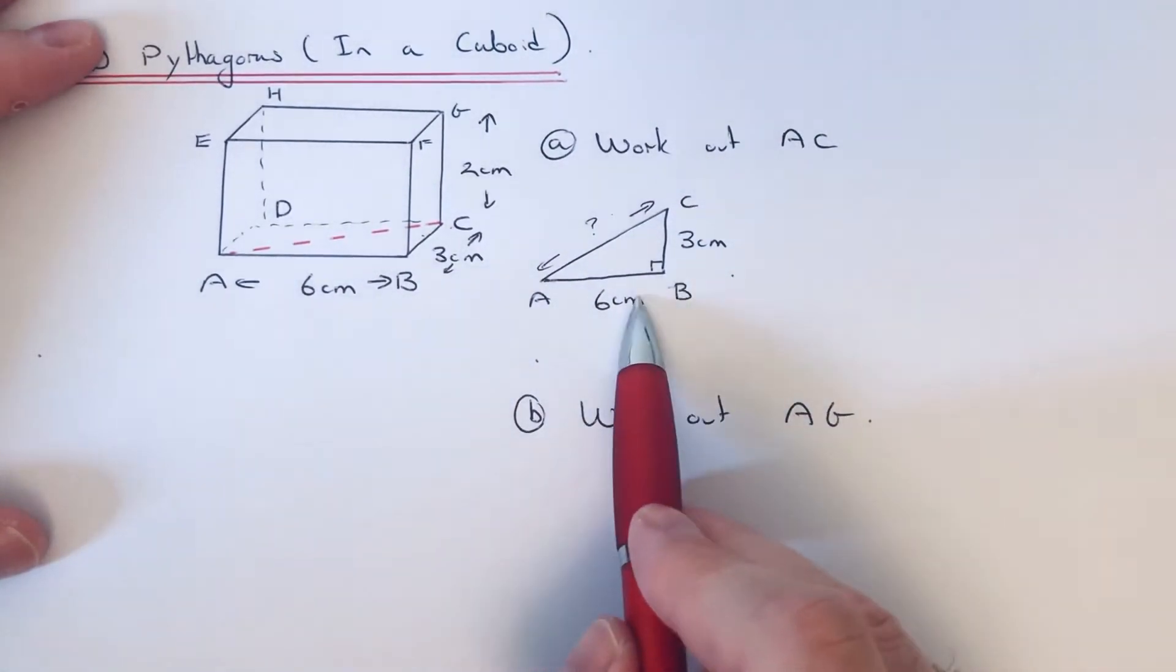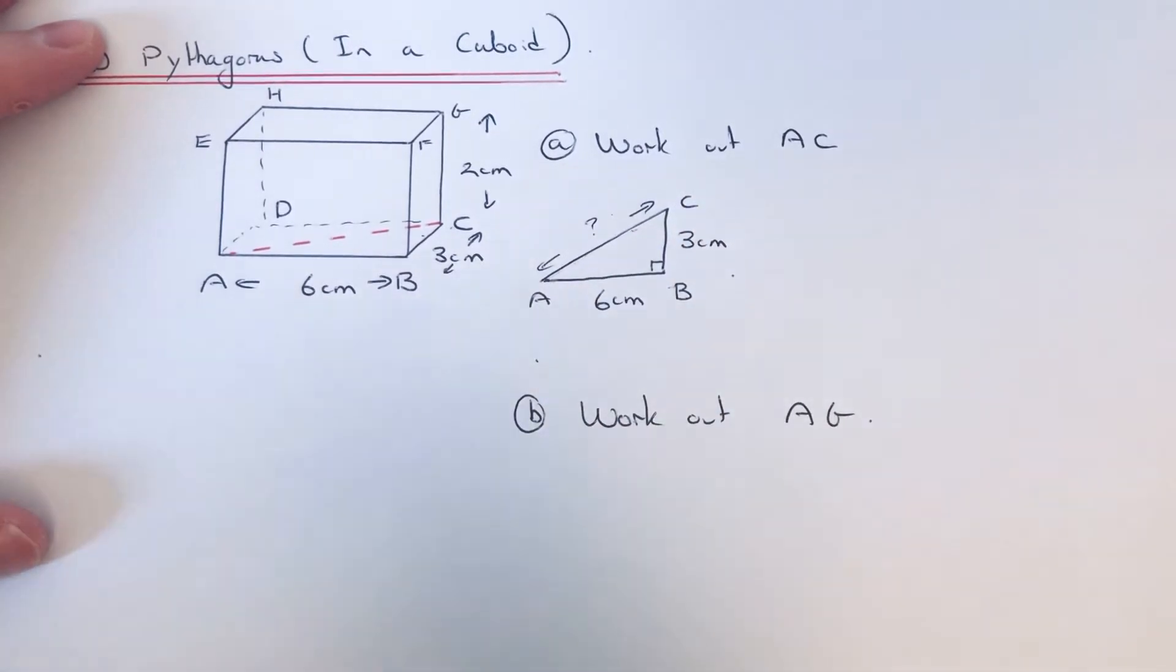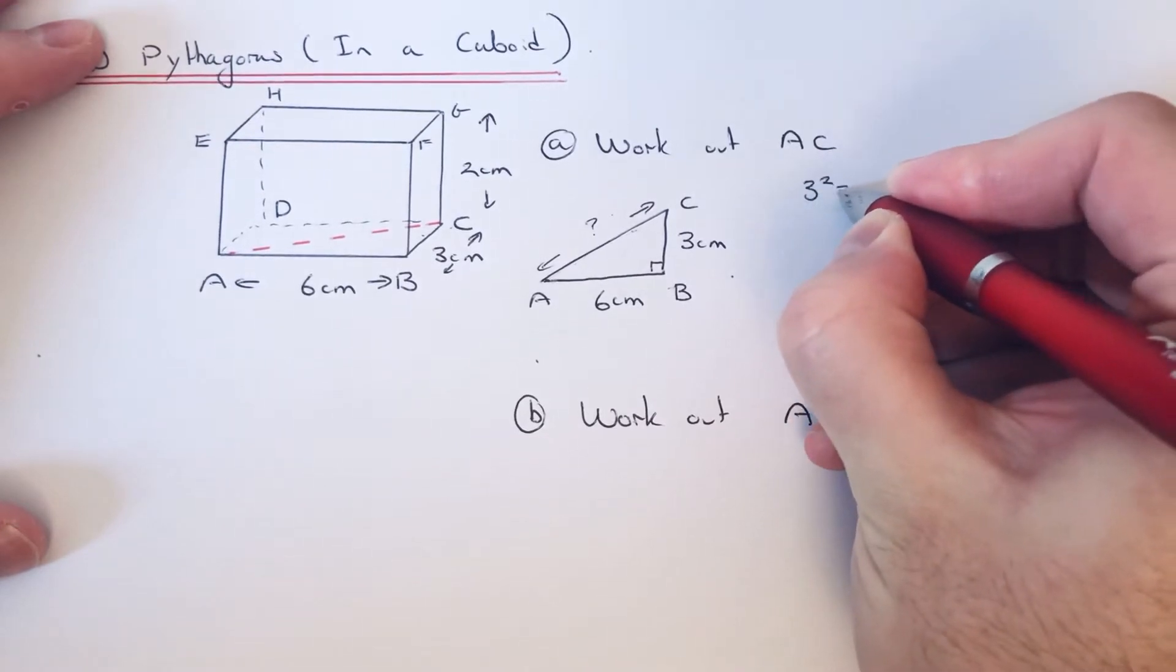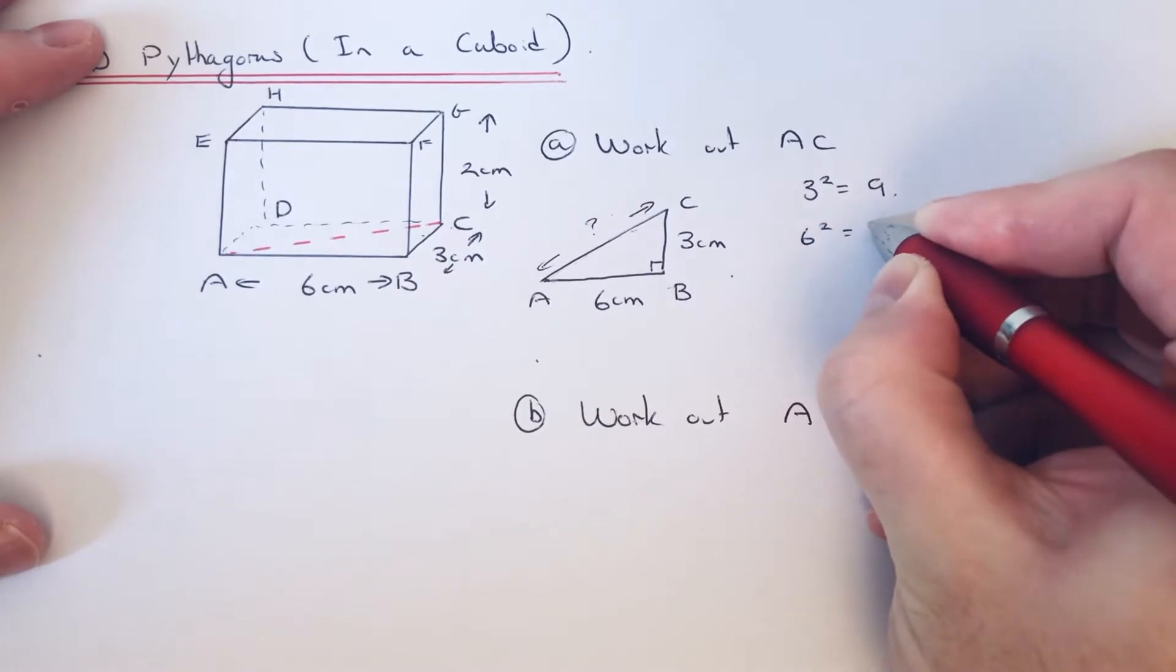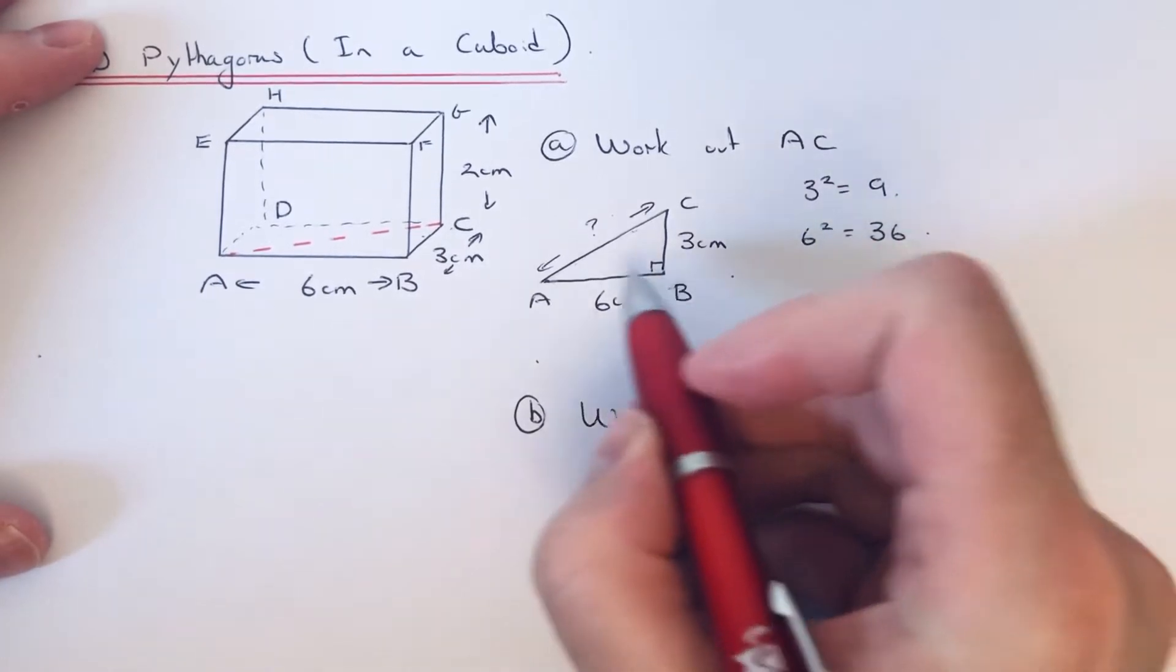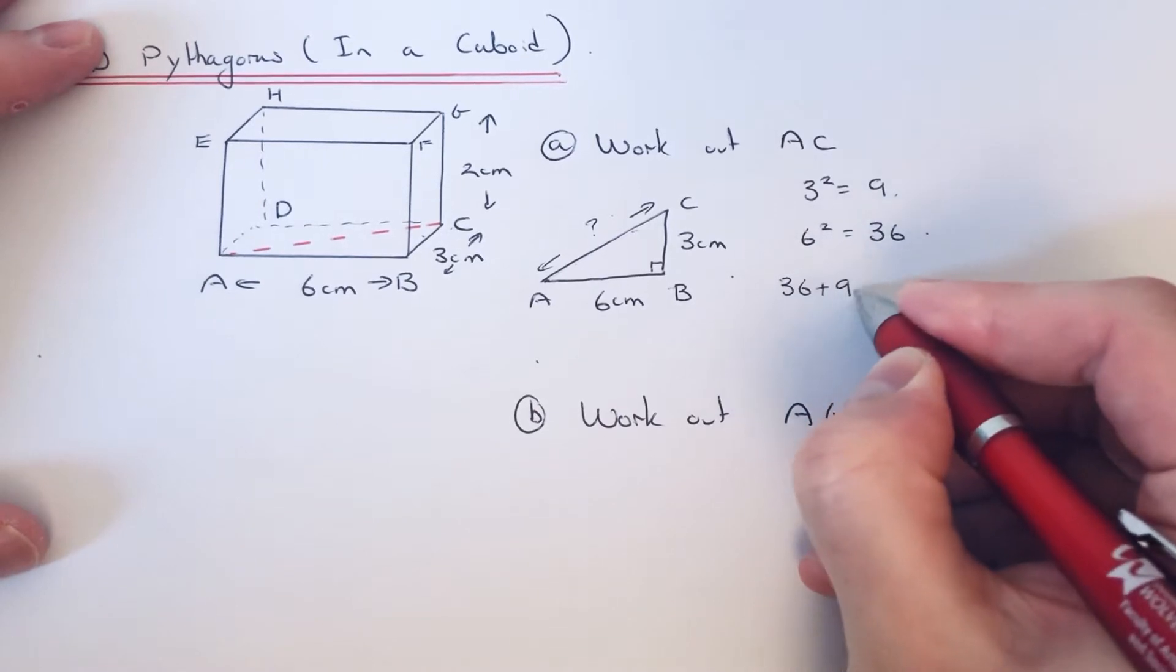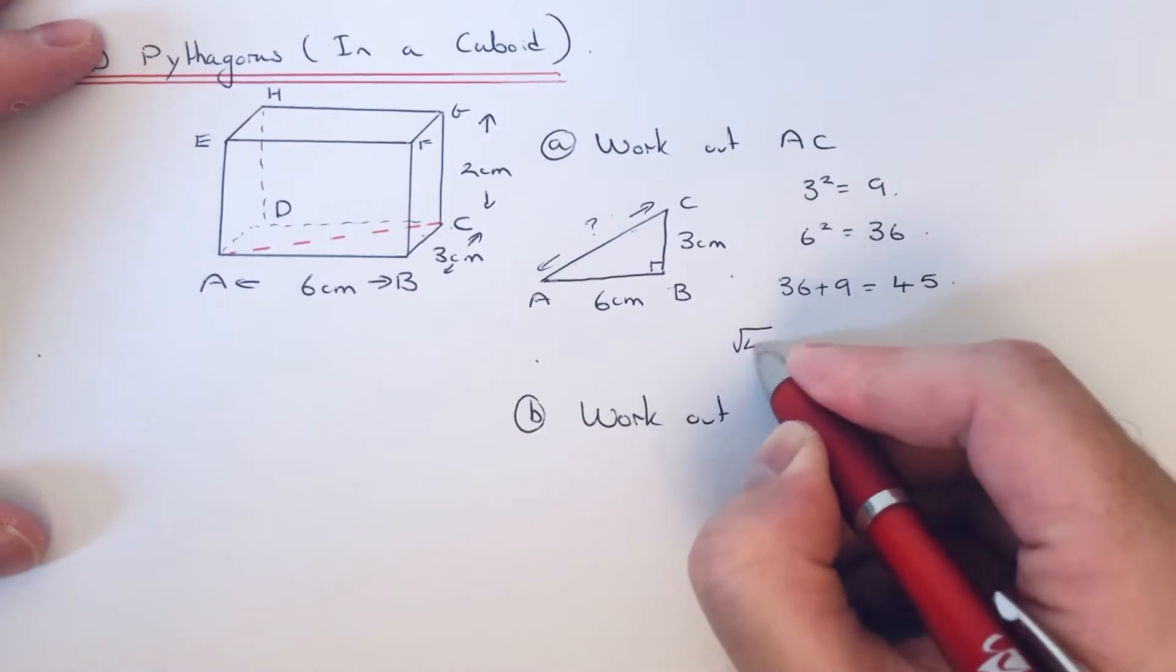As you can see we've got a right-angle triangle, we've got two sides, and we can use Pythagoras to find the third side. So to do Pythagoras, we square the sides. 3 squared is 9, 6 squared is 36. Since that is the longest side, we add these together which is 45.